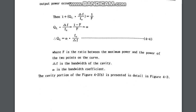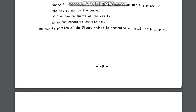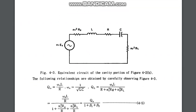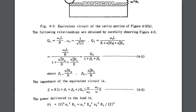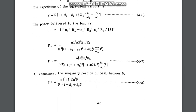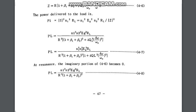Alpha is the bandwidth coefficient and Δf is the bandwidth of the cavity. The quality factor equation for the cavity can be derived from the equivalent circuit. By removing the transformers and converting to corresponding resistances, we get a simple equivalent circuit. The quality factor is then Q = ωL/R, with ω0 = 1/√(LC), giving QL = Q0 divided by (1 + β1 + β2). At resonance the imaginary portion becomes zero, giving us the power delivered to the load PL.